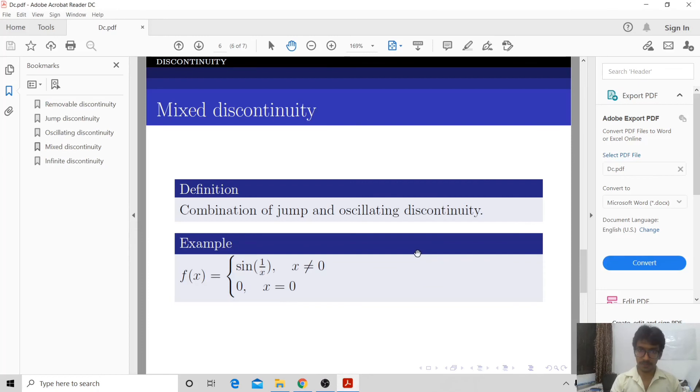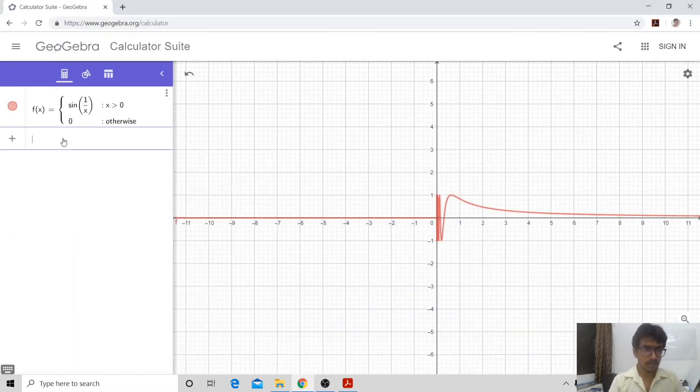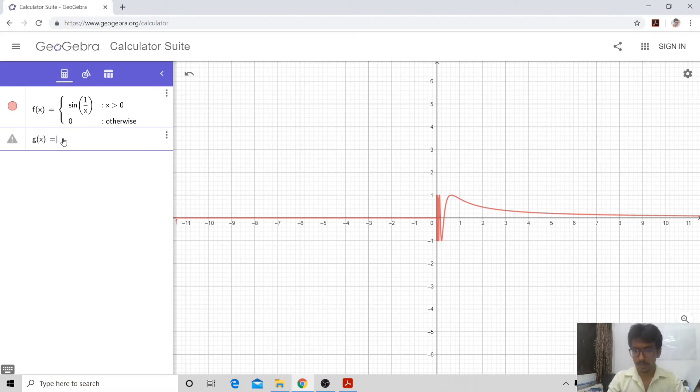And the last type of discontinuity is infinite discontinuity. It means when your x approaches c, the right limit may become infinity or minus infinity and the left limit becomes the other. How is it? Let us try and plot this thing. Here my function is, I am simply plotting this part and see what happens with this.